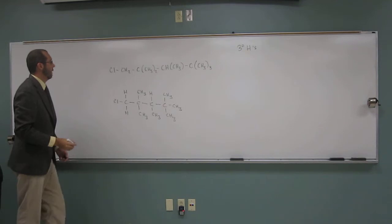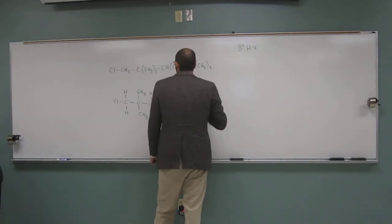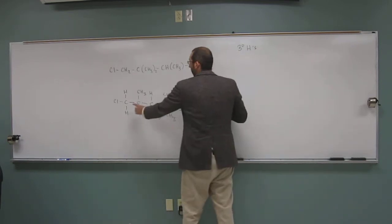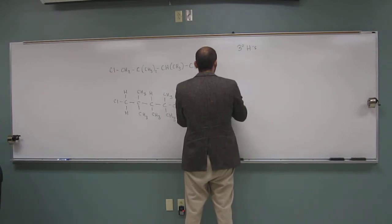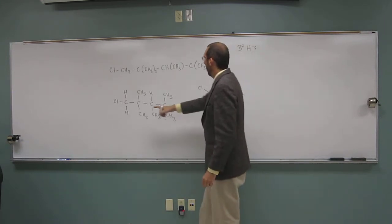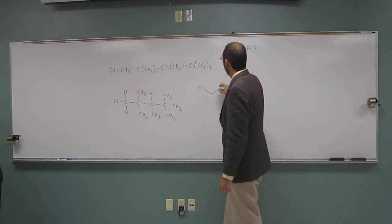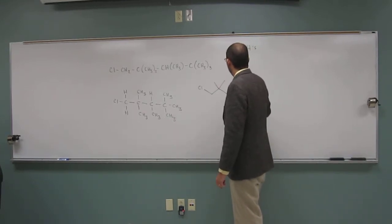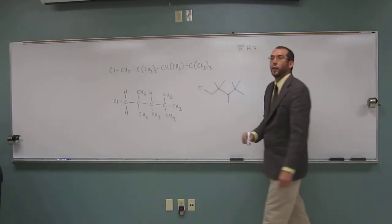And honestly, you should be able to do it from here, but again, I like to just go ahead and draw it in bond line form, so one, two, three, four, five. And on the first carbon, I just have the chlorine, on the second carbon, I have two methyl groups. On the third carbon, I just have one methyl group, and on the fourth carbon, I have three methyl groups.